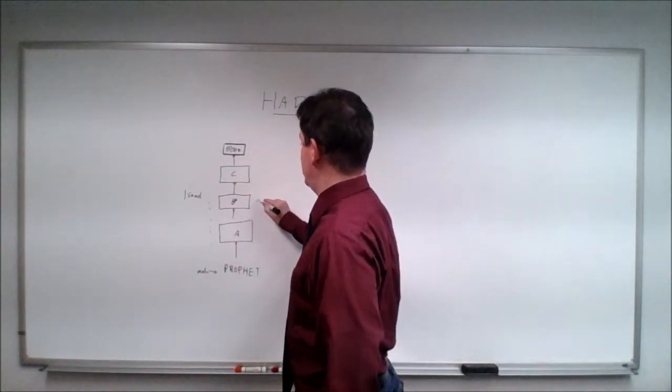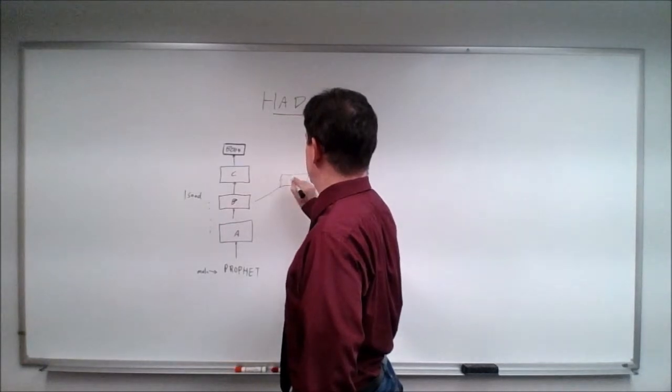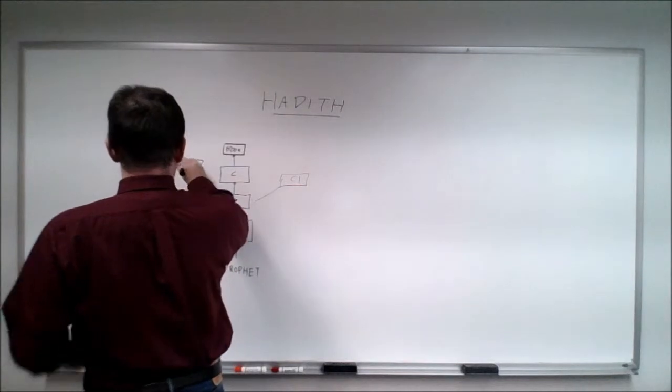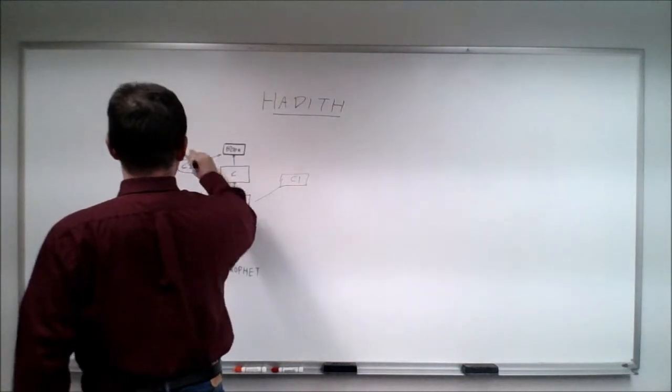What you have is often something like this. C1 goes there. C2 goes there. And they go to a bunch of books, sometimes the same book.